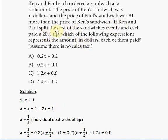And remember, it says Ken and Paul split the cost of the sandwiches evenly, so they divide the total cost by two. Dividing the total cost by two is going to be X plus one-half dollars. So X plus one-half dollars is what each of these two fellows owe.